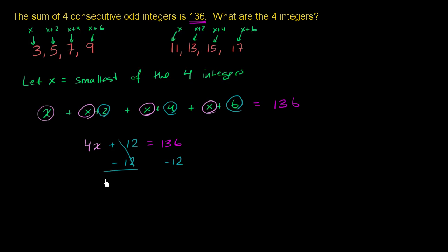Subtracting 12 from both sides gives us, well, on the left-hand side we're just left with 4x. And on the right-hand side, we are left with 136 minus 12 is 124. Did I do that right? Yeah, 124. So what is x?